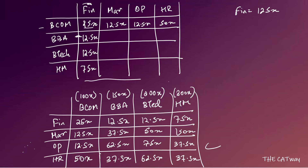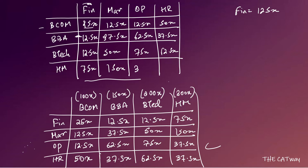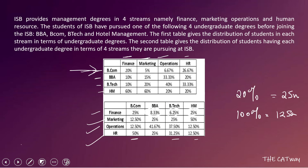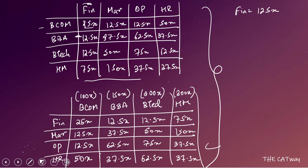We can now fill the full cross-reference table: BBA to Marketing = 37.5x, Operations = 62.5x, HR = 37.5x; BTech to Marketing = 50x, Operations = 75x, HR = 62.5x; Hotel Management to Marketing = 150x, Operations = 37.5x, HR = 37.5x. This detailed table approach is the proper method, though those confident with percentages can answer directly.